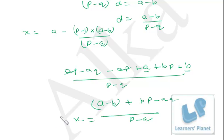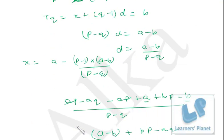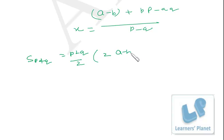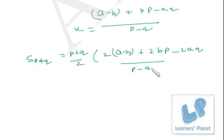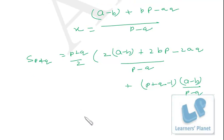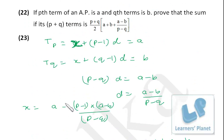That is the value of x, the first term. Now we find the sum of (p+q) terms: S_(p+q) = (p+q)/2 × [2x + (p+q−1)d], where d = (a−b)/(p−q). You just substitute and solve — it is unnecessarily lengthy, but not difficult, and you'll arrive at the required result.